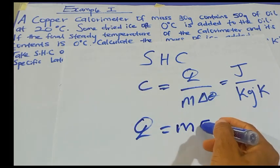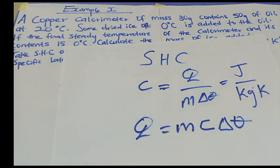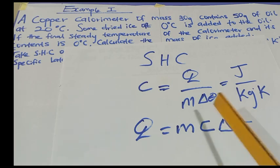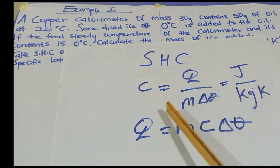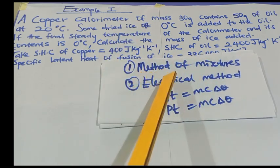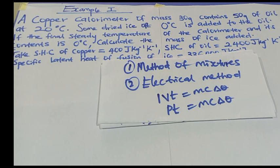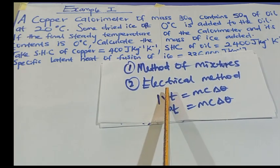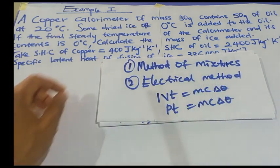The quantity of heat Q is equal to mass times specific heat capacity times change in temperature: Q = mcΔT. Before we solve this question, just have it in mind that Q = mcΔT, meaning three things are needed: mass, change in temperature, and quantity of heat. There are two methods of determining specific heat capacity: the method of mixtures, which uses a calorimeter, and the electrical method.